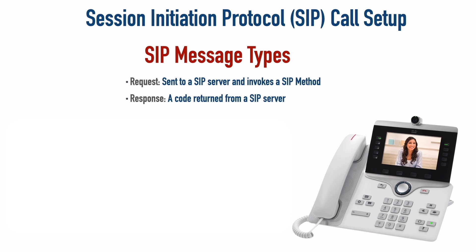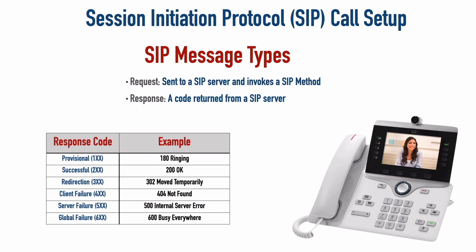SIP response codes are much like the responses we get when we point a web browser to a web server. For example, have you ever gotten a 404 error in your browser? That was because the page you were looking for was not found — that's an HTTP message. That type of message is also a SIP message. There is a lot of overlap between SIP and HTTP messages; they're not identical but they share common response codes. Looking at the table on screen, we have six different categories of response codes. If a call is set up and torn down normally, we'll probably only see response codes in the 100 or 200 range. 300 and above typically indicate some sort of issue.